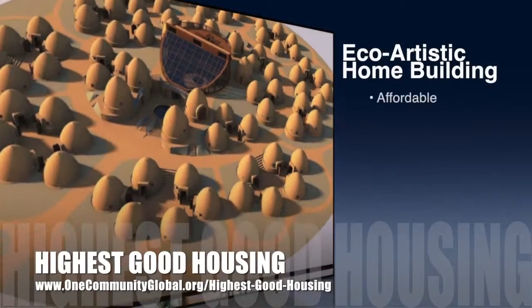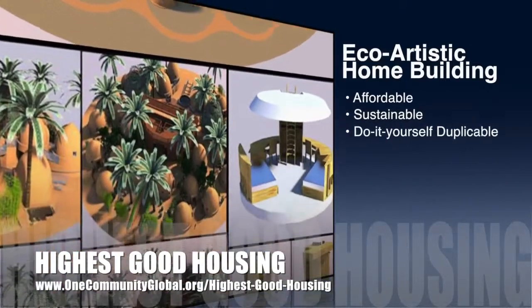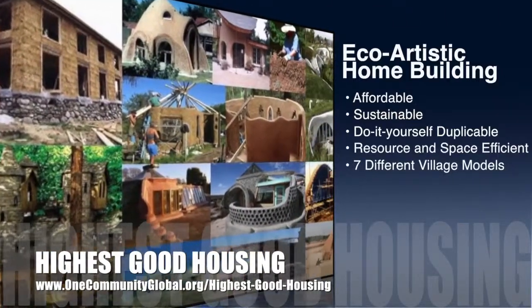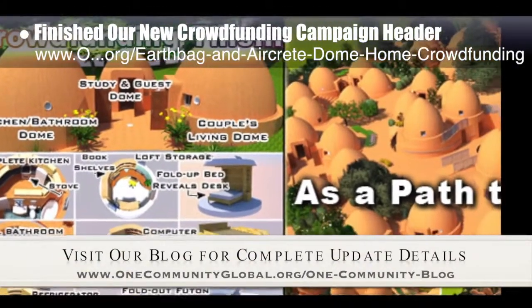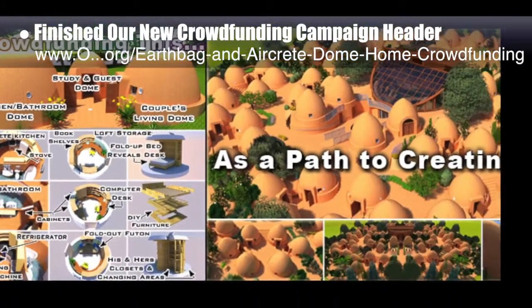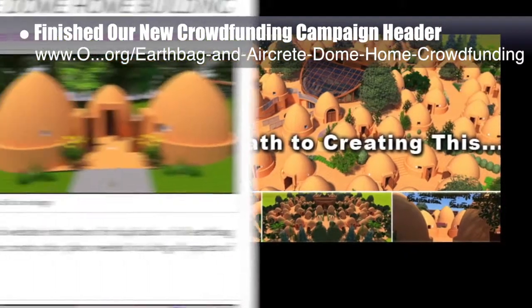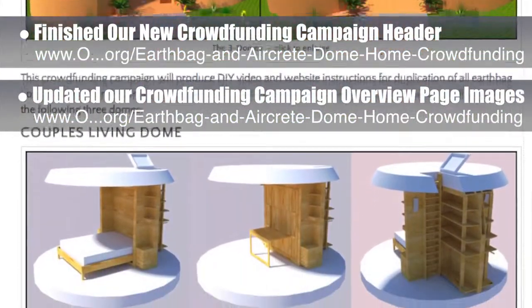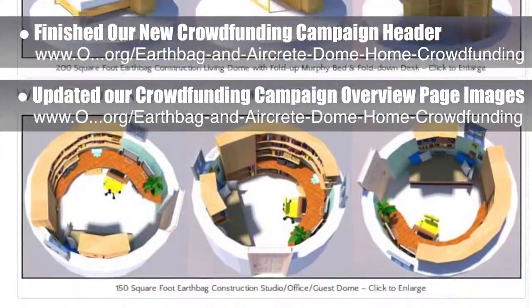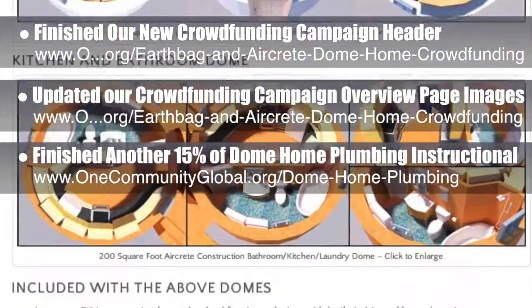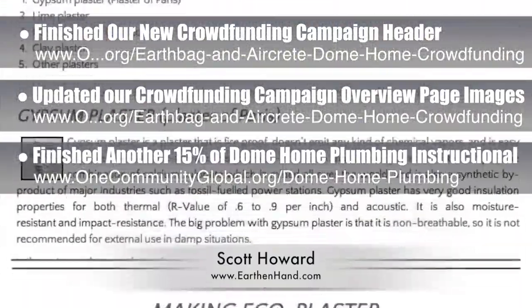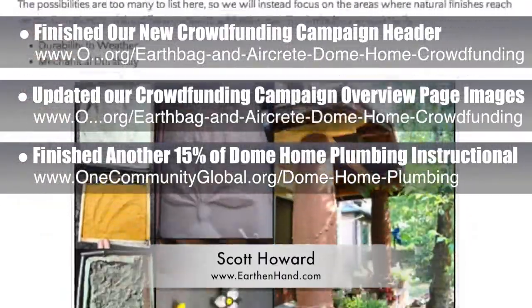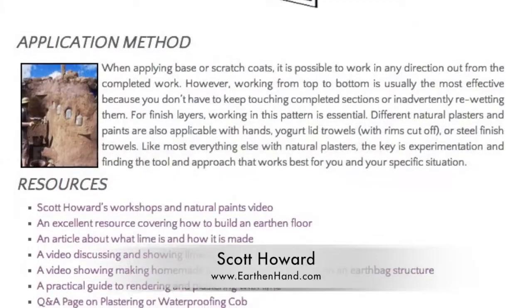OneCommunity's approach to Highest Good Housing is eco-artistic home building that is affordable, sustainable, do-it-yourself duplicable, resource and space efficient, and consists of seven different sustainably constructed village models. This week the core team finished our new crowdfunding campaign header, which clearly depicts what we're creating and why. This header will be at the top of each of the 15 open source tutorial pages that are part of the crowdfunding campaign. We also updated our crowdfunding campaign overview page with expandable pictures of our intentions for each of the three domes. Behind the scenes, we finished another 15% of the dome home do-it-yourself plumbing instructional, bringing us to 30% complete. Additionally, Scott Howard, sustainable building expert and owner of Earthen Hand Natural Building, finished feedback and final edits to the natural plaster section of the open source plaster page, which we then shared publicly for the first time.